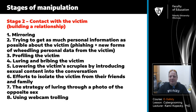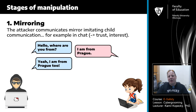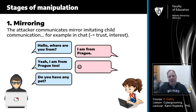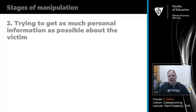Now we will describe techniques used for manipulation in cyber grooming. First is mirroring — a kind of manipulation where the attacker communicates by imitating child communication, for example in a chat. The reason is to inspire trust or interest. For example: 'Hello, where are you from?' 'I'm from Prague.' 'Yeah, I'm from Prague too!' 'Do you have any pet?' 'I have a dog.' 'Incredible, me too!' — simple mirroring of information obtained from the child.